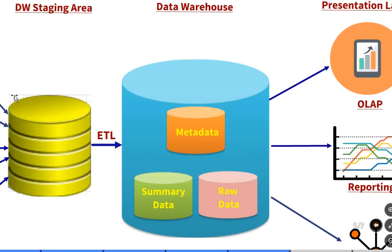In the data warehouse there are basically three things: metadata, summary data, and raw data. Metadata is data about data — it is one of the most important aspects of the data warehouse. It helps the data warehouse analyst identify and find out what data is in the warehouse and where it is actually stored, so they can use that data effectively and efficiently to find the information they require.